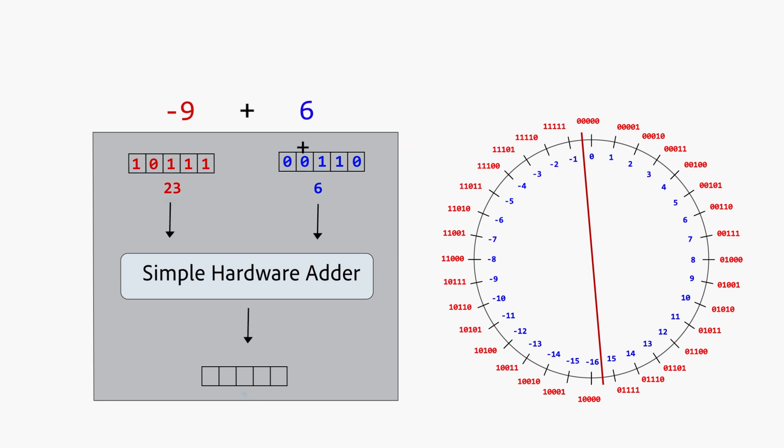Therefore, the hardware adds 23 and 6 and produces 29 in decimal or 11101 in binary.